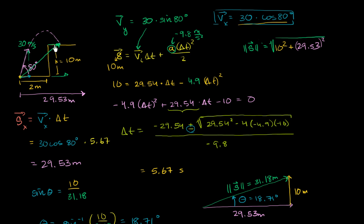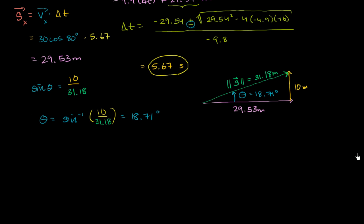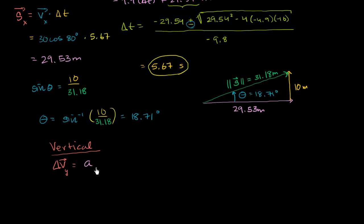What we need to do is figure out the vertical component of its velocity. One thing we did figure out in the last video is what the time in the air is going to be. And we know a way of figuring out our final velocity from an initial velocity given our time in the air. We know that the change in velocity — and we're only dealing with the vertical now, because the horizontal velocity is not going to change. We've assumed that air resistance is negligible. The change in the vertical component of velocity is equal to the vertical component of the acceleration times time.